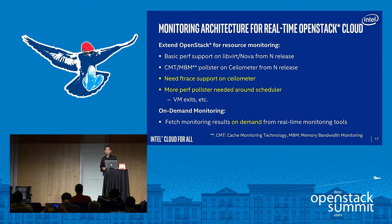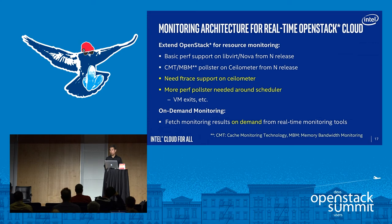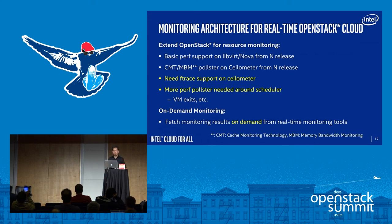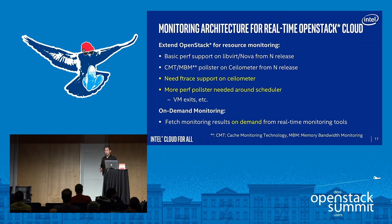This summarizes what I pointed out in the previous diagram. We already have some level of monitoring capability in OpenStack Newton releases, but for real-time debugging analysis we need to extend. For example, we need to add ftrace and also perf around scheduling and VM exits and context switching. And the other thing is on-demand — whenever developers find some issues, we need to provide capability for developers to get more detailed information available from ftrace, for example.